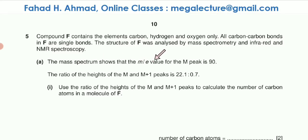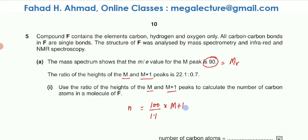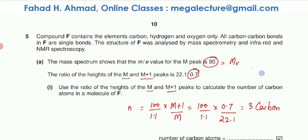The mass spectrum shows that the M peak has a mass-to-charge value of 90, which means the molecular mass of this molecule is 90. The ratio of the M+1 height is also given. Using that ratio — which arises from the carbon-13 isotope — you can find the number of carbon atoms using the formula: 100 over 1.1, multiplied by the M+1 peak divided by the M peak, which gives 100 over 1.1 times 0.7, divided by 22.1. The answer is 3, so the molecule has 3 carbon atoms.